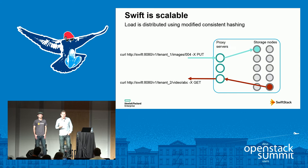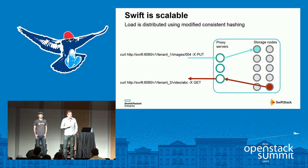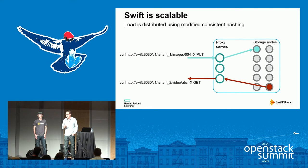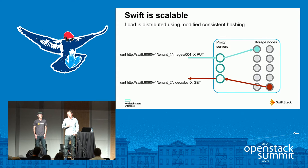One feature of Swift is that it is highly scalable. In a series of previous summits, we've heard talks describing production deployments of Swift that have scaled to tens of petabytes, storing billions of objects. Any object put into Swift is first handled by a front-end proxy server, then stored in a pool of back-end storage nodes. The proxy server uses a scheme known as modified consistent hashing to choose which storage node each object will be stored on.